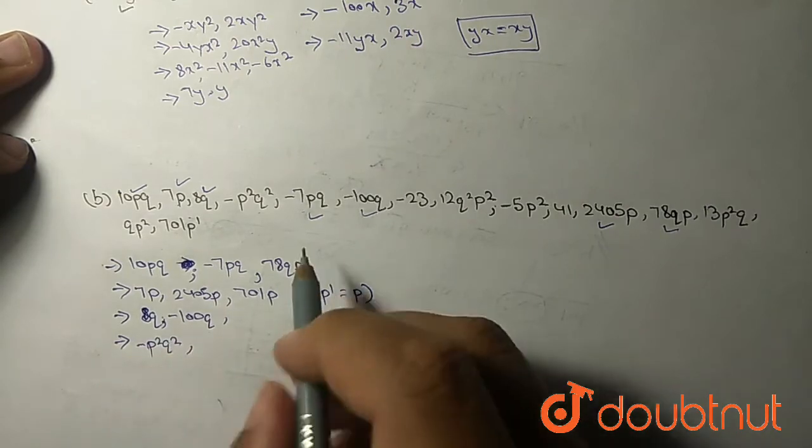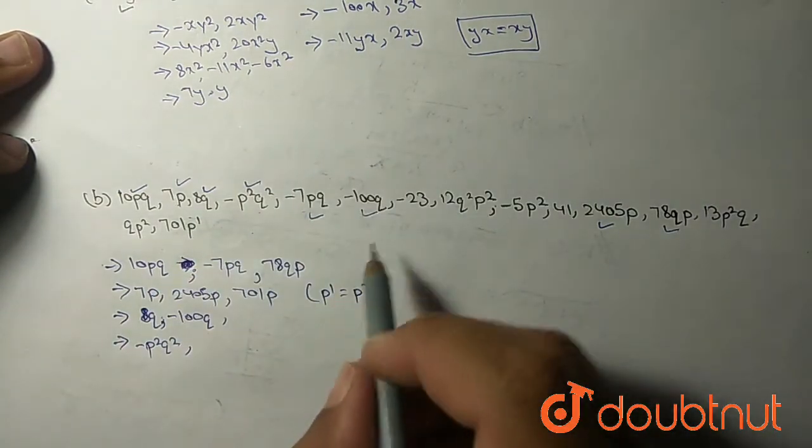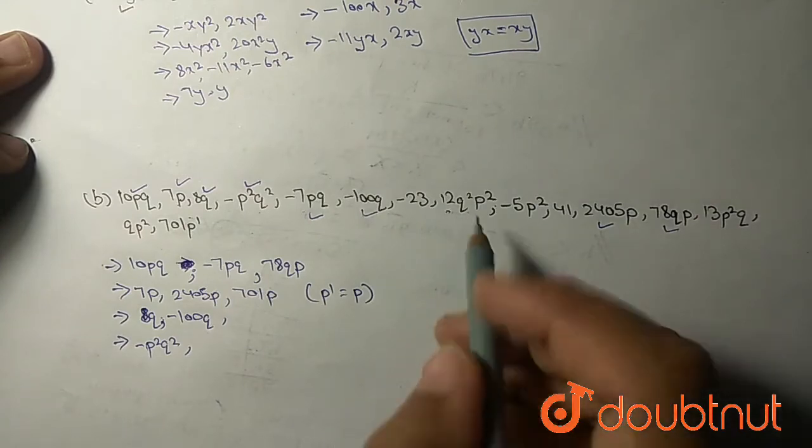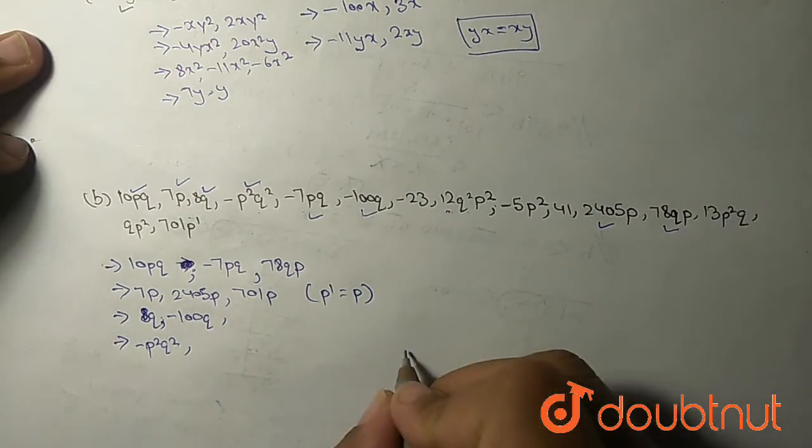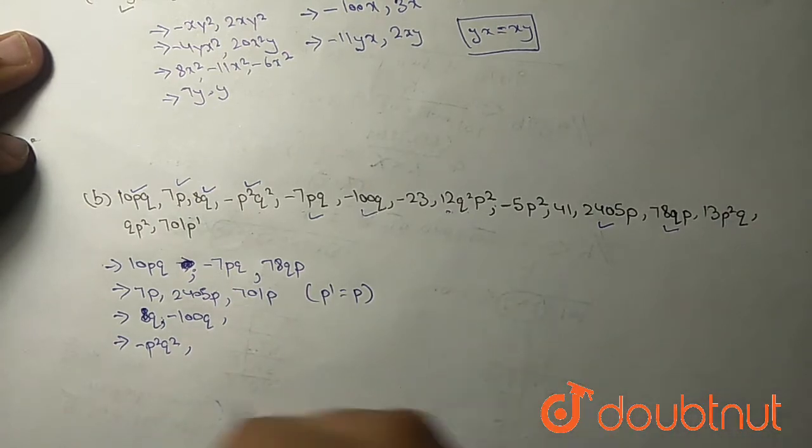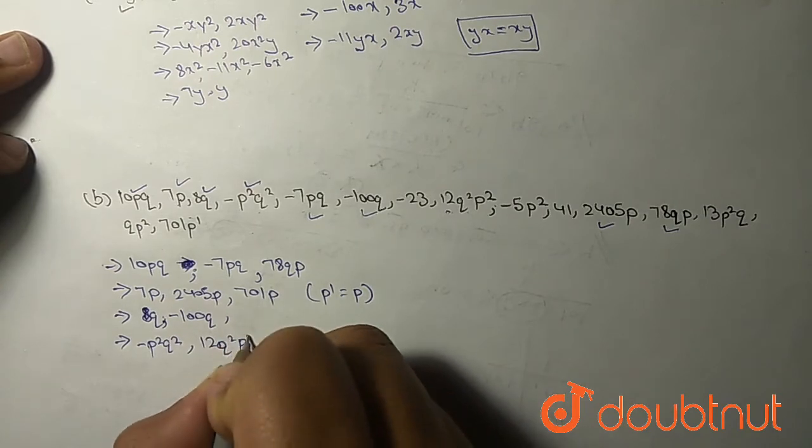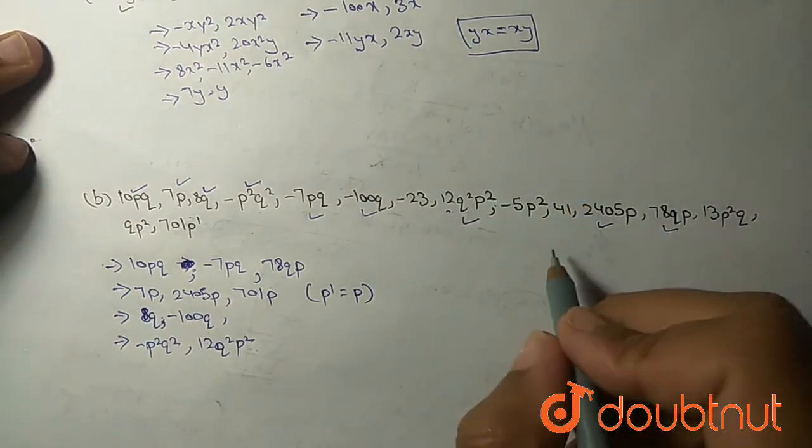8q minus p squared q squared. Minus p squared, yeah here is minus 12q squared p squared, nothing. It is same. p squared q squared or q squared p squared, it is all same.